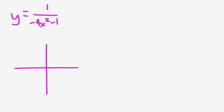So let's say that you had the reciprocal function 1 over negative 4x-squared minus 1, and you want to sketch the graph for it. First of all, you're going to want to find whether there's any vertical asymptotes, and if so, where they are.